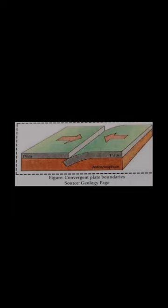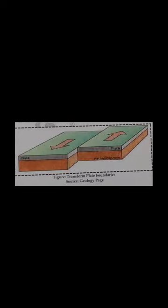Transform plate boundaries: here lithospheric plates slide past one another without separating or converging. The two plates are in contact along a vertical fracture called a transform fault. The plates move parallel to each other without causing any construction or destruction, but only deformation of existing landforms. The San Andreas fault along the eastern coast of the Pacific Ocean is the best example of a transform fault.